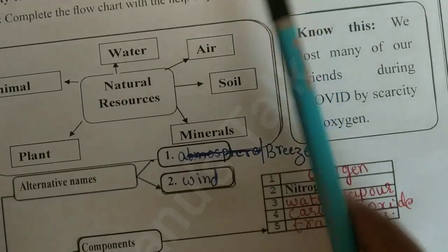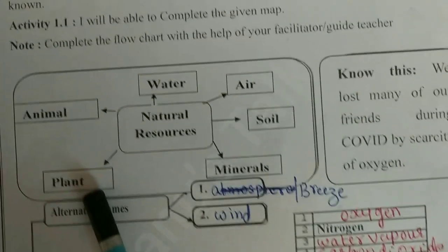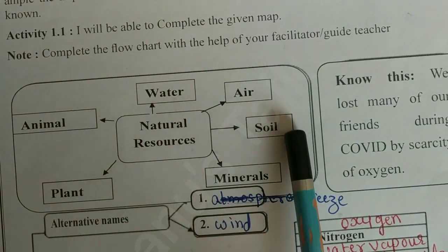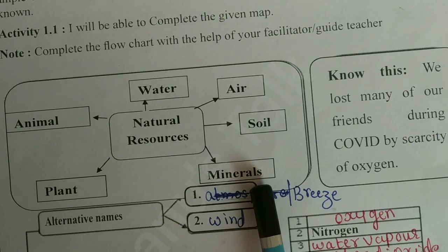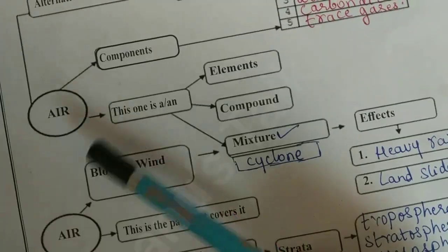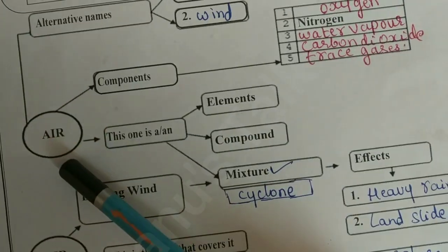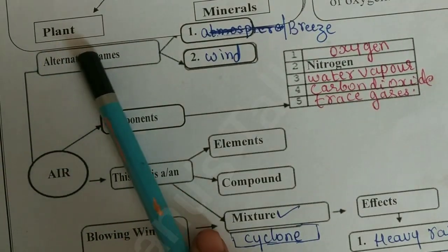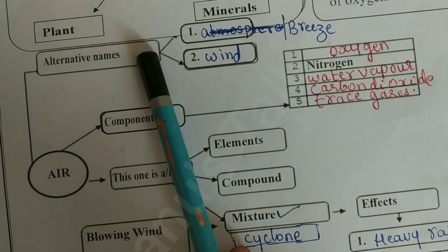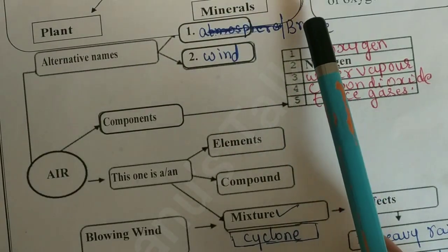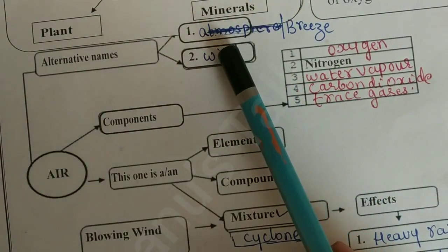Examples are plant, animal, water, air, soil, and mineral resources. This is the flowchart. We have to write the alternative names of air — we can write breeze and wind.